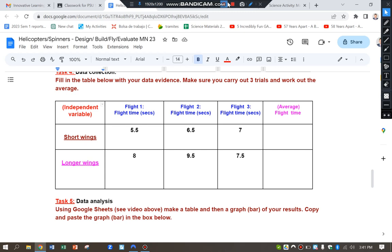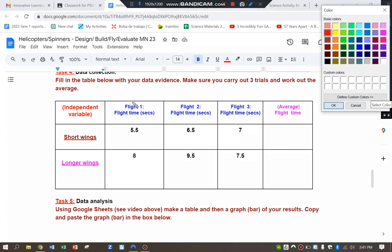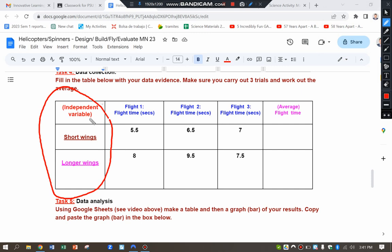Firstly, it's important that you write in what you're changing for your independent variable here. For me, for my investigation, I've chosen to change the length of the wings. And for the different lengths of the wings, I've recorded down the different flight times.